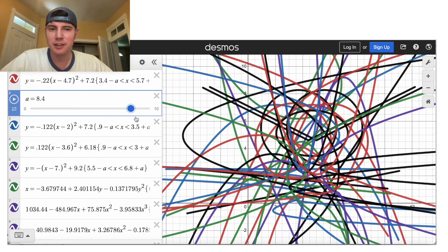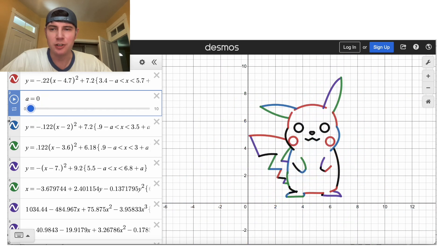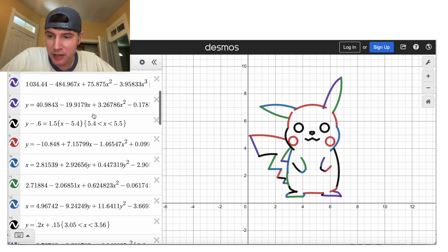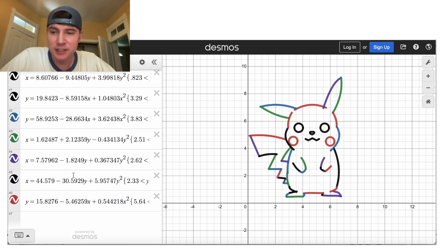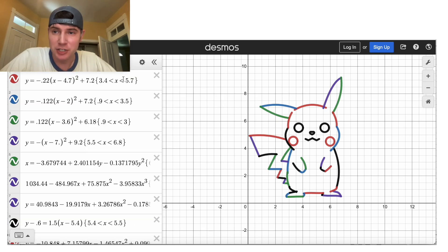So there it is, a jumbled mess, and there's Pikachu. So right here, we have Pikachu made up of 46 equations with restrictions.